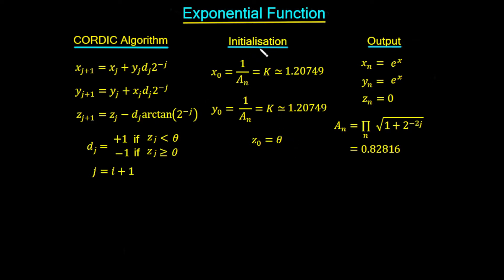When we work through this, we're going to get at the output the value for xₙ as e^x, and yₙ will also be e^x. The value for z will have tended towards 0 because we're working in rotation mode.